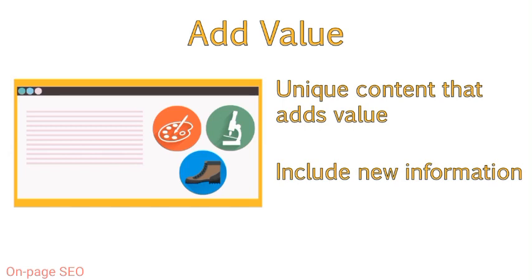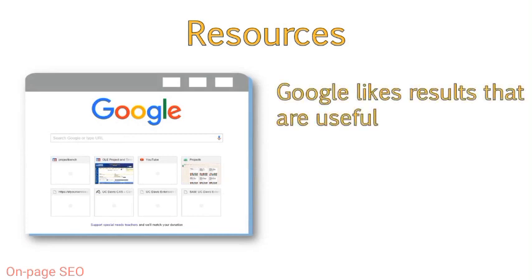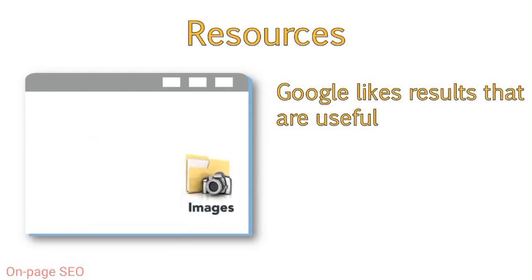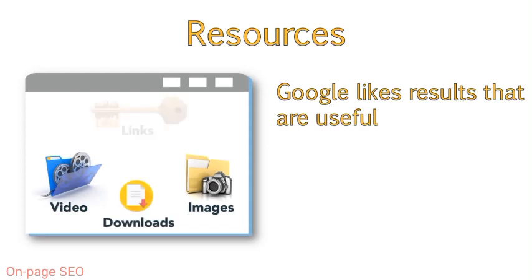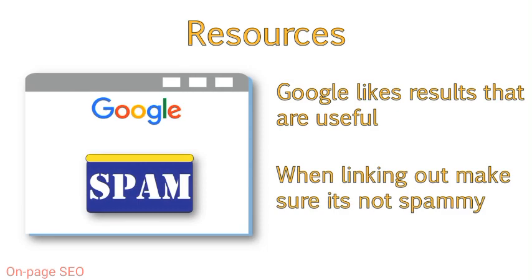For example, you might want to include a video, a series of images, or other material to make your content stand out and offer more value to the reader than similar articles would. Remember, Google likes providing results that they think will be useful for users. If your page just consists of a giant block of text, no matter how well written, it will not be viewed as useful as a page which incorporates other resources such as images. Where possible, include resources like images, video, downloadable items, and links to other useful resources, even if they're not on your own domain. By linking out to other domains, you are showing Google that your site provides value by presenting users with answers that meet their needs. When you do link out to other sites, make sure that the site is not spammy and is actually useful to the reader.